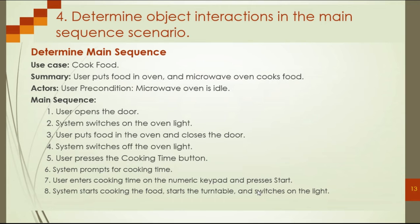Step four is to determine the object interactions. We now determine the interaction of the objects using the sequence or description of the use case. The 'cook food' use case description starts with: the user opens the door, the system switches on the oven light, the user puts the food in the oven and closes the door, and the system switches off the oven light after the door is closed.